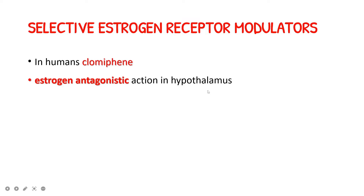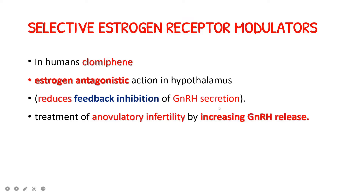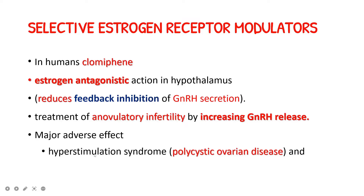Coming to clomiphene: in humans, clomiphene has got estrogen antagonistic action in the hypothalamus. It reduces the feedback inhibition of GnRH secretion. So clomiphene is an estrogen receptor antagonist — it produces estrogen antagonistic activity in the hypothalamus, thereby decreasing the feedback inhibition of GnRH secretion. This action can be utilized in the treatment of anovulatory infertility by increasing GnRH release.